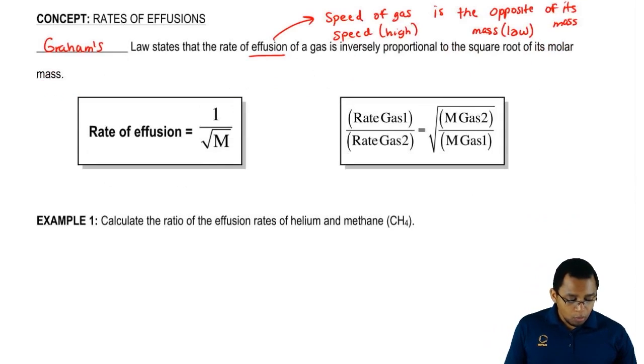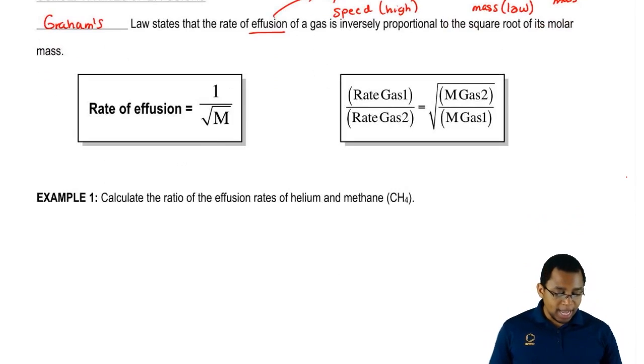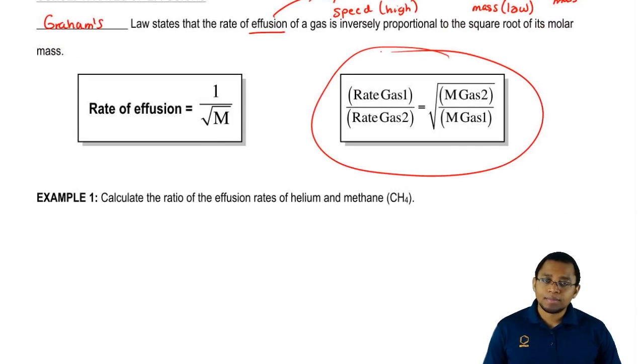We're going to say when we're comparing the rates of two gases, we use this form of Graham's Law of Effusion. Pay close attention. Basically, we're going to say the rate of gas one is equal to its rate divided by the rate of gas two.